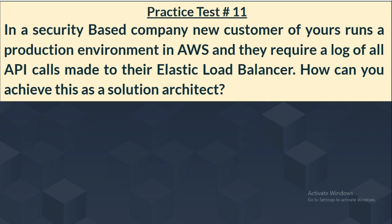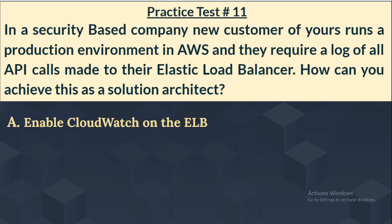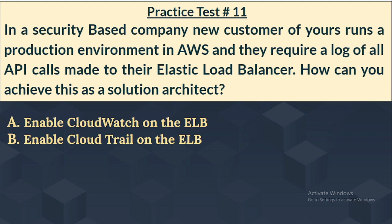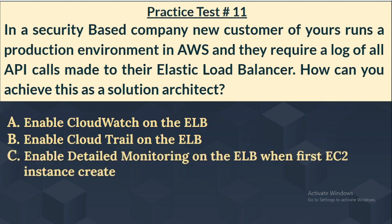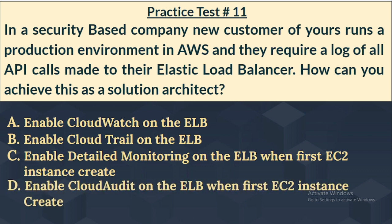Option A: Enable CloudWatch on the ELB. Option B: Enable CloudTrail on the ELB. Option C: Enable Detailed Monitoring on the ELB when the first EC2 instance is created. Option D: Enable CloudAudit on the ELB when the first EC2 instance is created.